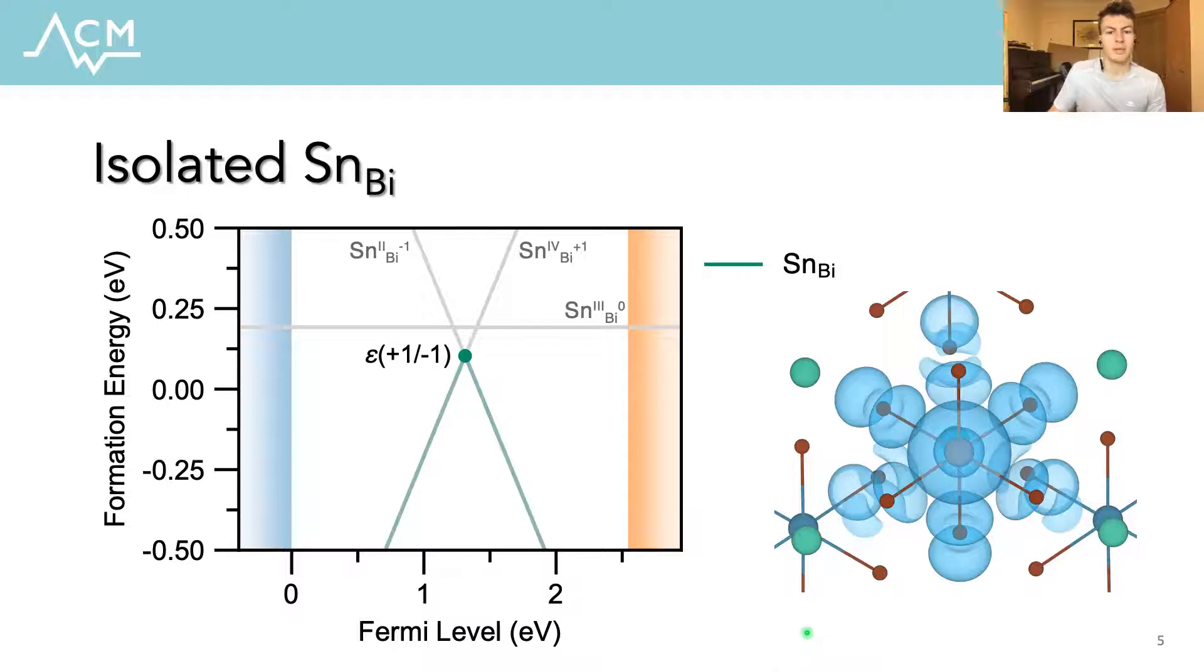So in this case, for a hypothetical tin on bismuth substitutional dopant, we witnessed so-called negative u behavior, with the only stable charge states for a Fermi level within the band gap being plus 1 and minus 1, corresponding to tin in the plus 4 and plus 2 oxidation states. So this behavior suggests that tin dopants will likely disproportionate into plus 4 and plus 2 oxidation states in the material, and that the Fermi level would be subsequently pinned in this region here, in order to maintain charge balance.